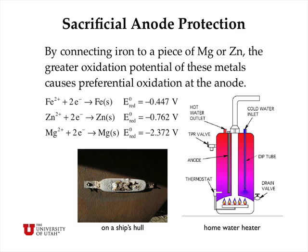Here's a picture of a sacrificial anode that's simply bolted to a ship's hull. Instead of having the iron in the ship's hull oxidized, the sacrificial anode is oxidized preferentially. Oxidation still occurs and every once in a while you have to replace the anode, but that's a lot cheaper than replacing the entire hull of the ship.